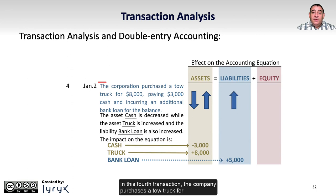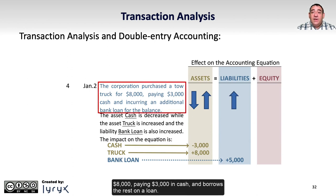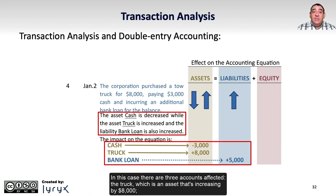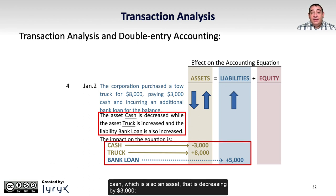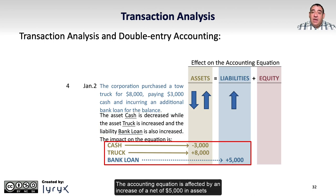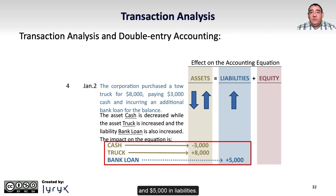In this fourth transaction, the company purchases a tow truck for $8,000, paying $3,000 in cash and borrowing the rest on a loan. There are three accounts affected: the truck, which is an asset increasing by $8,000; cash, which is also an asset decreasing by $3,000; and a bank loan, which is increasing by $5,000. The accounting equation is affected by a net increase of $5,000 in assets and $5,000 in liabilities.